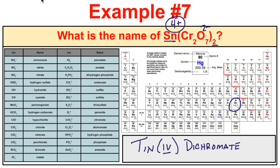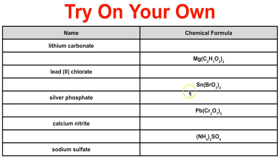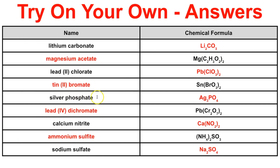Pause the video now and try these on your own: write the chemical formula for lithium carbonate, and name Mg(C2H3O2)2. Take five minutes to try these. Hopefully you got them all right — if so, you are an expert at naming and writing chemical formulas for compounds containing polyatomic ions. If you like what you see, click the subscribe button in the bottom right corner and feel free to leave comments or questions below.